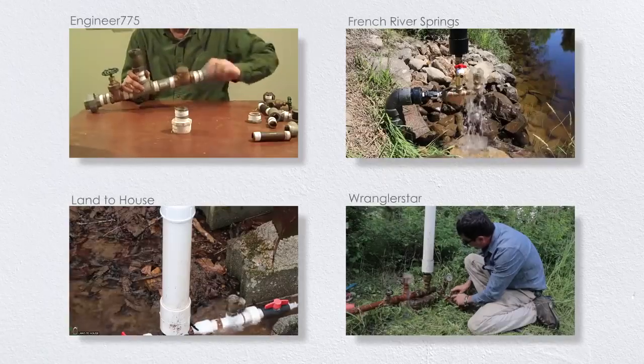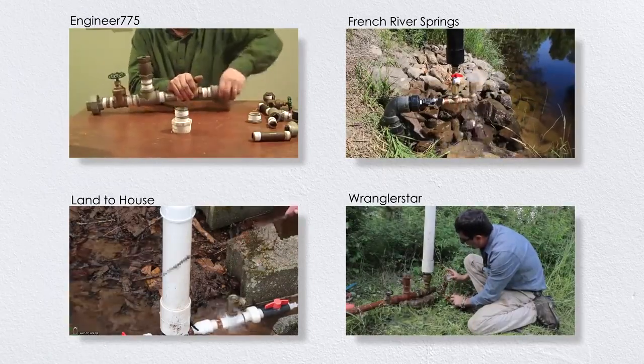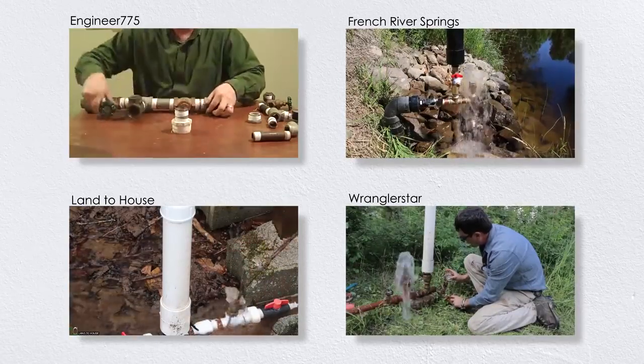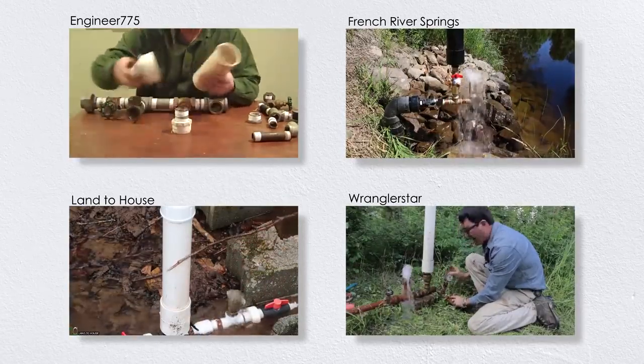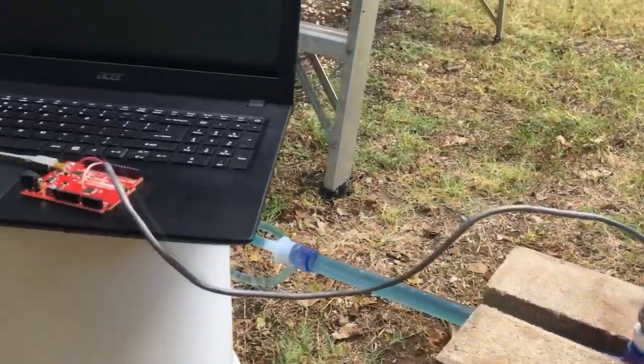A hydraulic ram is a clever device invented over 200 years ago that can pump water uphill with no other external source of power except for the water flowing into it. No, it's not a free energy device, but if you search around you'll find lots of great implementations of this style of pump on YouTube, mainly from people doing homesteading and off-grid lifestyle vlogs. And it's easy to see why ram pumps have such popularity among these groups.